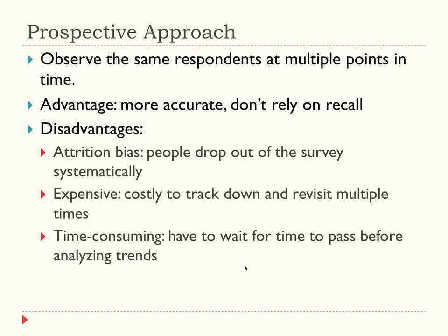One disadvantage of the prospective approach is attrition bias — when people drop out systematically, those who drop out differ from those who don't, which is almost always true. For example, if we're studying housing mobility and people who move are more likely to drop out, we underestimate mobility by losing movers. It's also extremely expensive, requiring massive grants. Finally, it's time consuming — if I only get baseline data today, I can't do time trend analysis until enough time has passed.